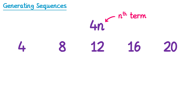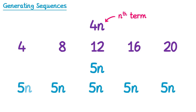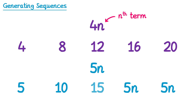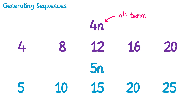Let's also generate the sequence with nth term 5n. So we'll do the first 5 terms again, substituting n for 1: 5 lots of 1 which is 5. For the second term 5 lots of 2 which is 10. For the third term 5 lots of 3, which is 15. For the fourth term 5 lots of 4 which is 20. And for the fifth term 5 lots of 5, which is 25. Once again we end up with the multiples of 5, or the 5 times table for 5n.